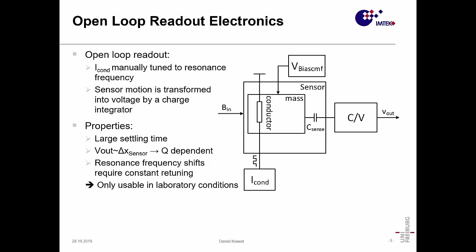Typically these devices have high quality factors to get very low noise floors. This leads in this configuration to very large settling times that limits the input signal frequency. Typical values would be several Hertz, four Hertz, something like this. Also, the output voltage here is dependent on the sensor motion, which depends on the quality factor, which is temperature dependent.